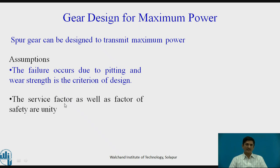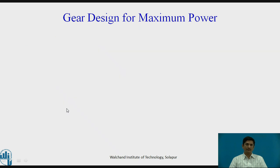The service factor CS and the factor of safety are considered as 1. Then, how to begin with? The effective load p-effective is given as p-effective equals CS PT plus PD. This is the exact estimation of the dynamic load and p-effective. p-effective is also given as p-effective equals SW into FS. We have two equations of p-effective.